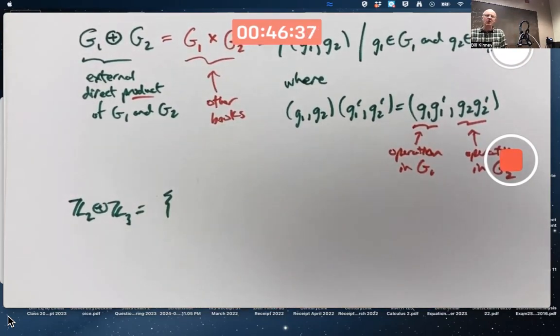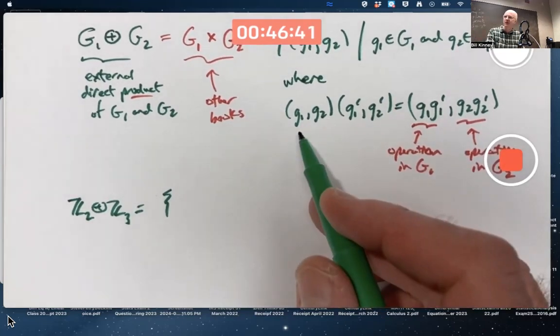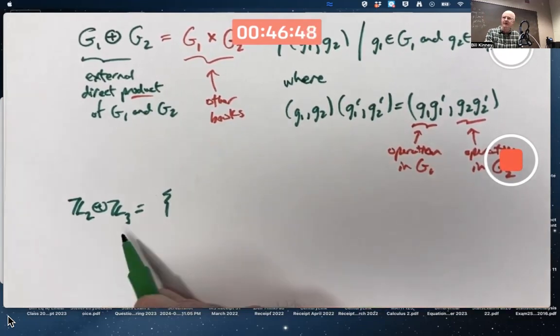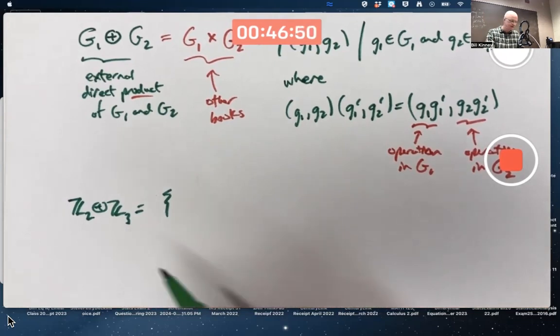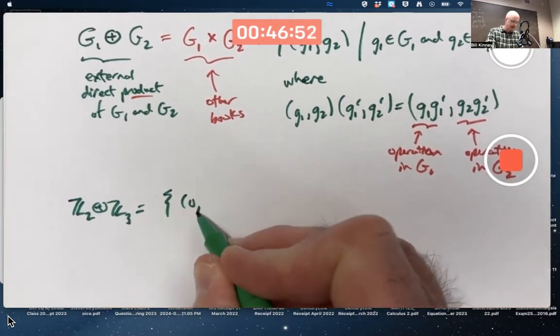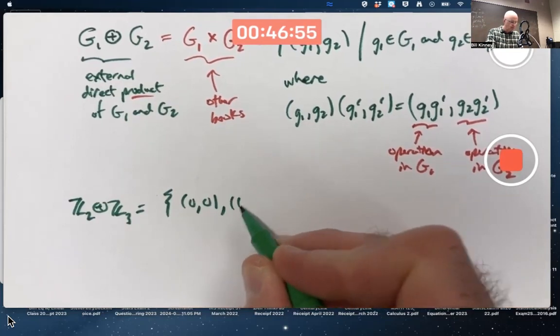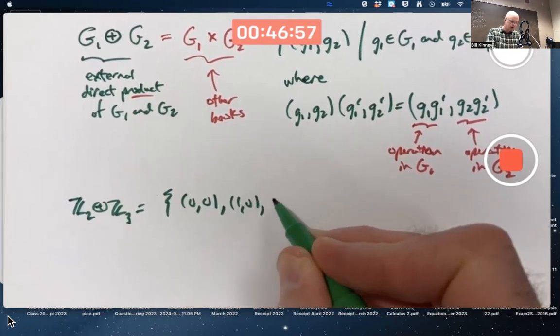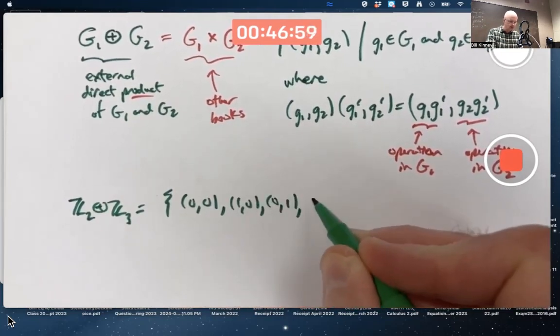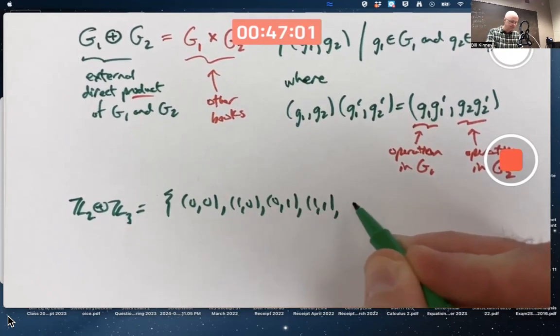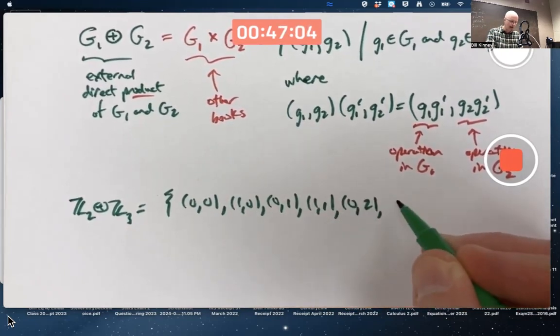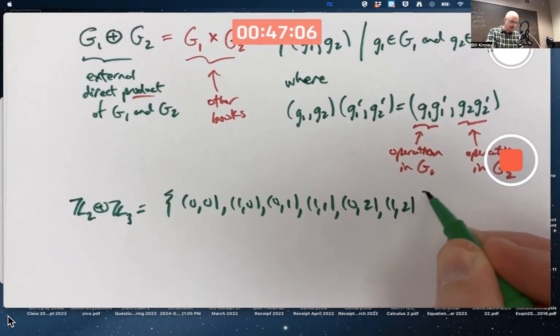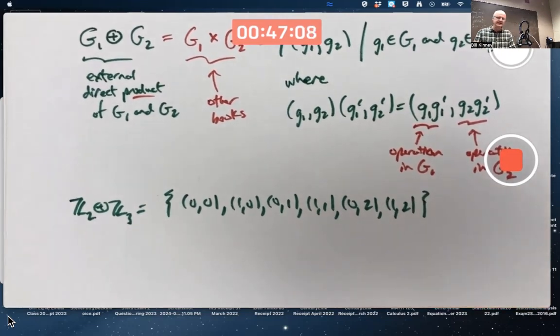This is, as a set, the set of all ordered pairs, where the first component, or coordinate if you prefer, either word is okay, is an element of Z2, and the second one's an element of Z3. So the elements are (0,0), (1,0), (0,1), (1,1), (0,2), and (1,2). There's 2 times 3, 6 elements.